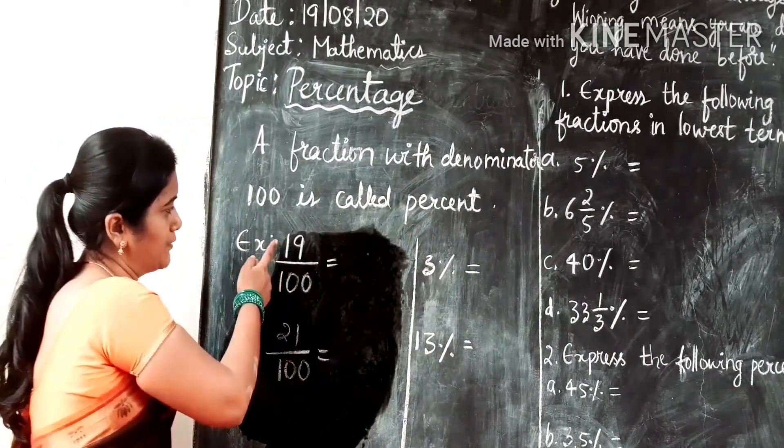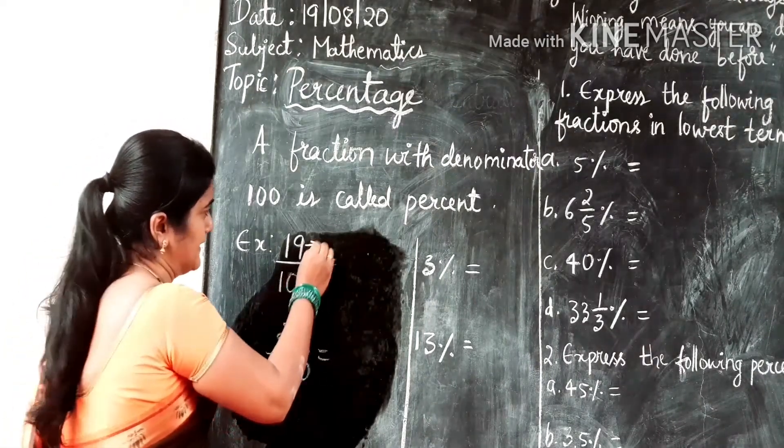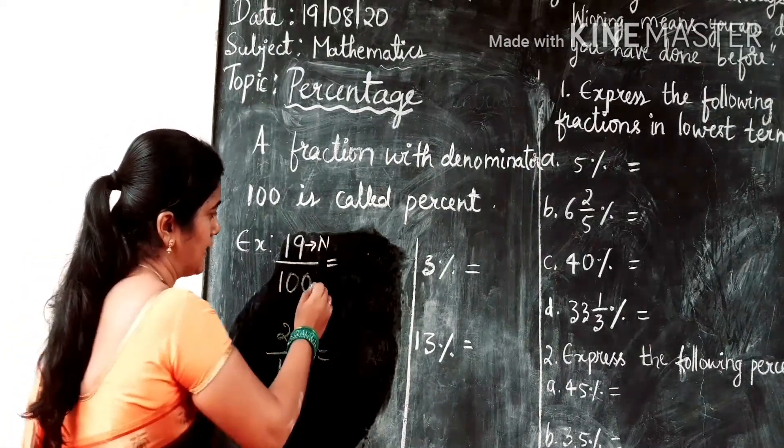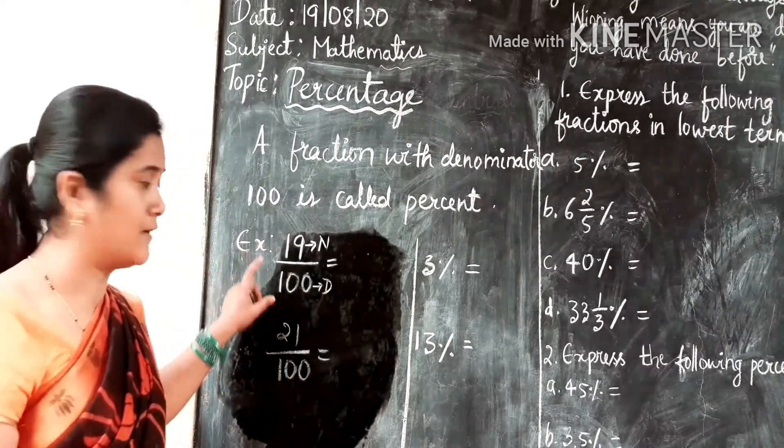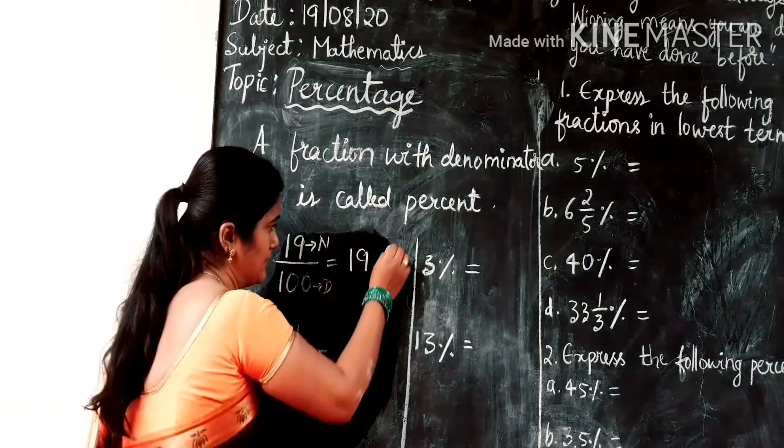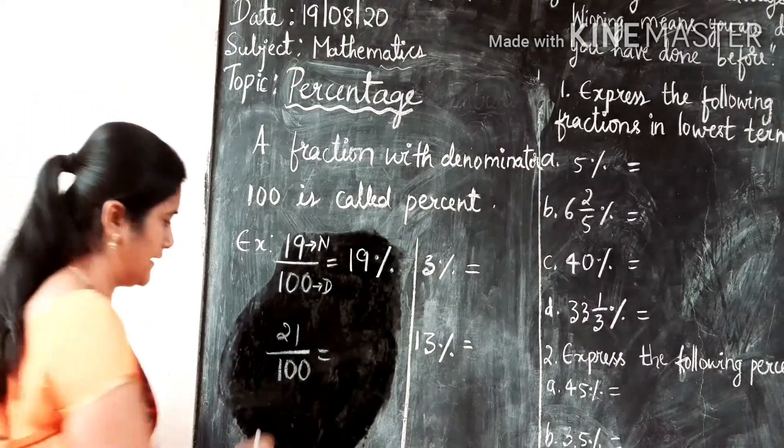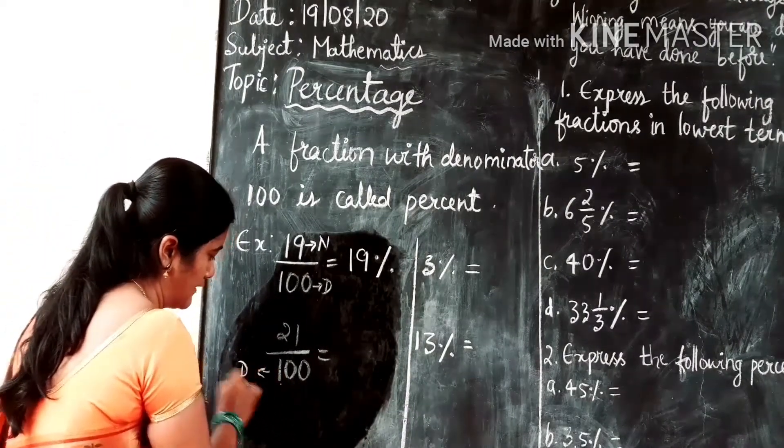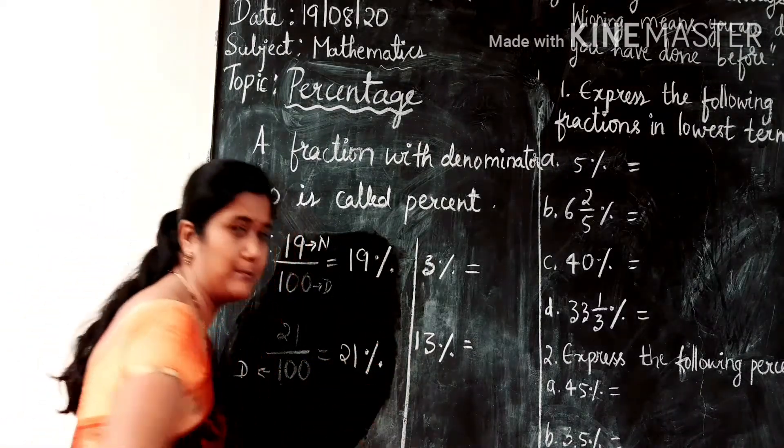For example, here you have a fraction 19 by 100, where 19 is numerator and 100 is the denominator. Such type of fraction where denominator is 100 can be written as 19 percent. One more example here is 21 by 100, where denominator is 100. So this can be written as 21 percent.